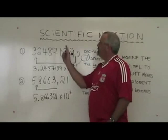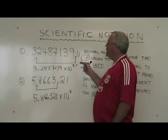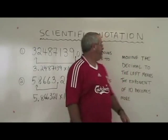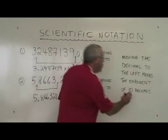The general rule in scientific notation is if you are moving your decimal to the left, the exponent of ten becomes more positive.